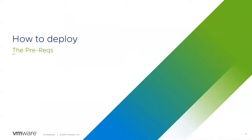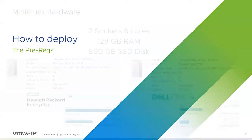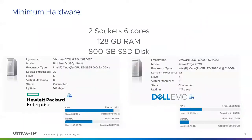Let's dive deep into the prerequisites so everybody has a good understanding of how this works and what you need. This is usually the spot where most people get hung up when they first dive into doing the VMware Cloud Foundation Lab Constructor. For minimum hardware, we're looking for two sockets, six cores apiece, a minimum of 128 gigs of RAM, and 800 gigs of SSD disk. We say SSD because spinning disk cannot handle the IOPS to deploy all this infrastructure in a nested environment.